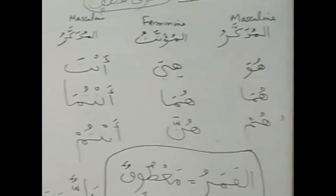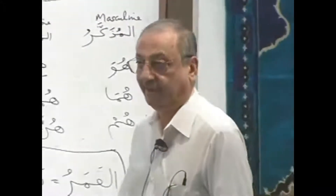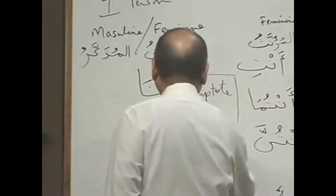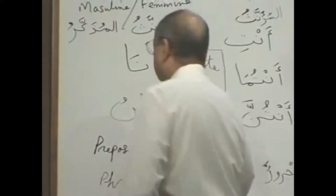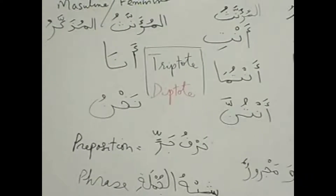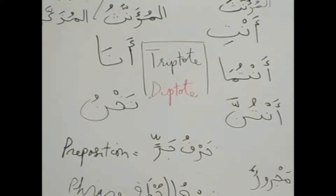And then the noun that declines but not fully, we call it Diptote. So Muhammadun, Muhammadan, Muhammadin — complete declension. But Aminata, Aminata, Aminata — it did not decline fully. It declined a little bit and stopped. So we call it Diptote.